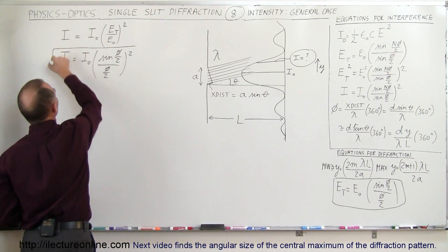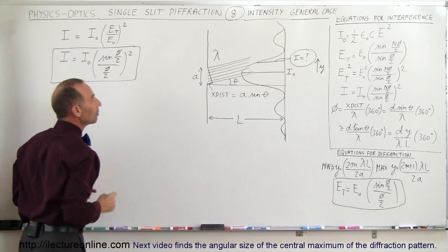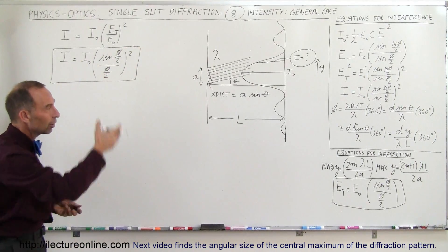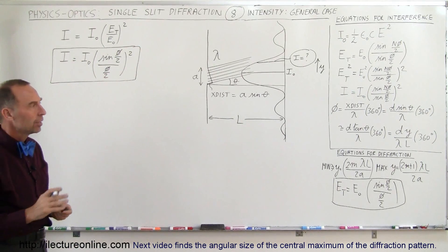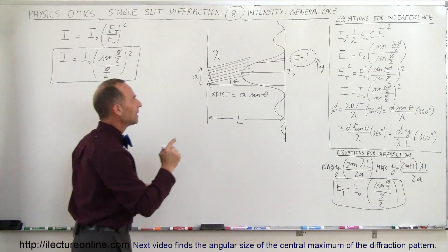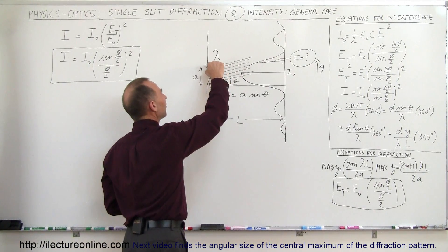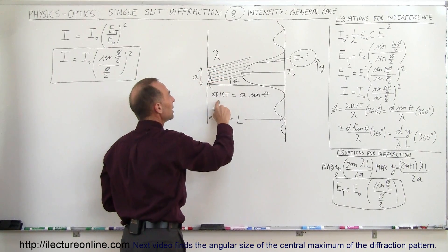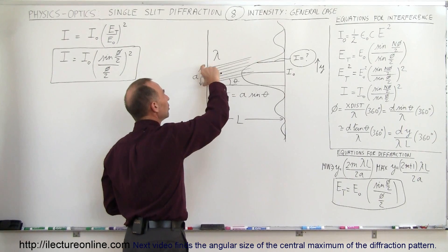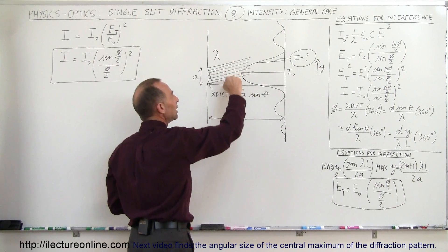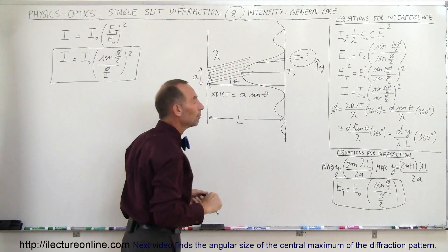This becomes the equation we use to find the intensity anywhere along our diffraction pattern. The extra distance traveled between the top of the beam compared to the bottom of the beam is equal to the slit width times the sine of theta, theta being the look-up angle.